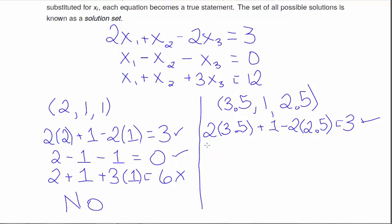What about the second equation? Well, X1, which is 3.5, minus X2, which is 1, minus X3, which is 2.5. 3.5 minus 1 is 2.5, minus 2.5 is 0. So that one gives a true statement.